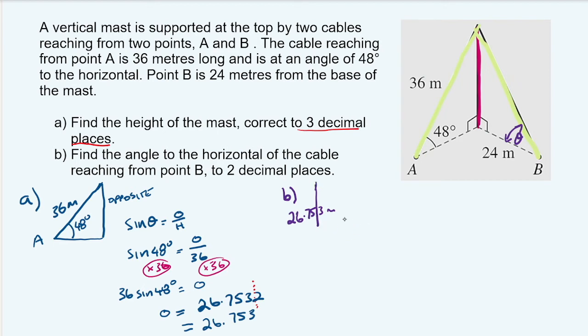Let's fix this drawing up. Not a very good drawing. Let's do it again. Here's our mast. That's looking a bit better. Here we go. This one is 24. And over here we've got 26.753. We actually have the adjacent side and the opposite side.